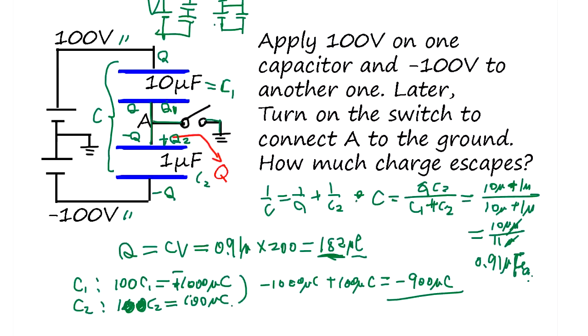The end result is the total charge here is going to be this much. But in the beginning it was series configuration, so you had Q and negative Q equaling zero. So actually the charge escape is only this much.